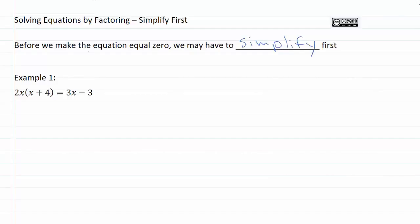So that means that if we have something like the equation in example one, where we've got lots of stuff happening on the left hand side, we are going to want to simplify before we start to move everything over to one side.